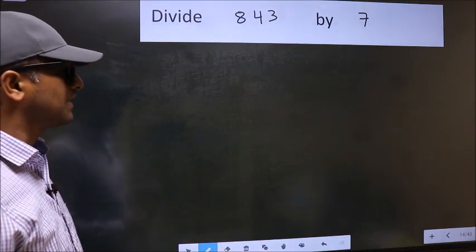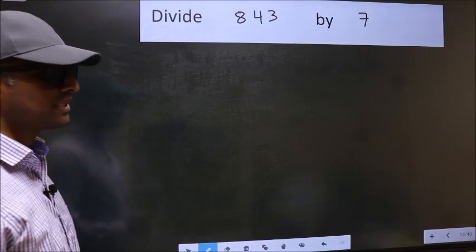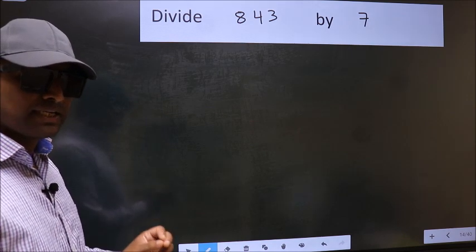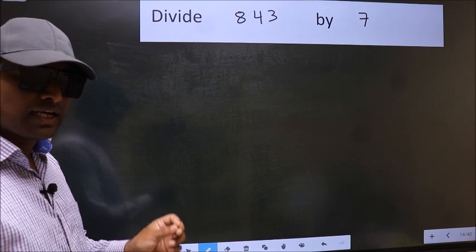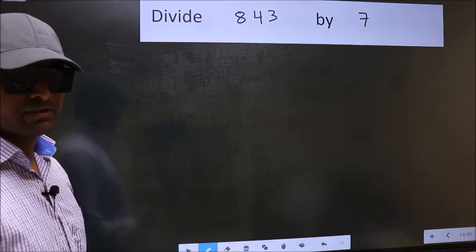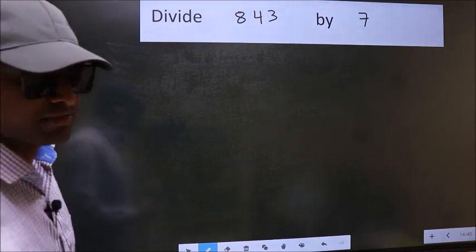Divide 843 by 7. While doing this division, many do this mistake. What is the mistake that they do? I will let you know. But before that, we should frame it in this way.